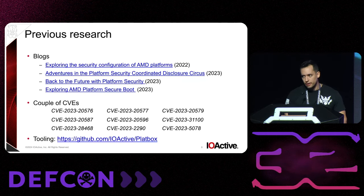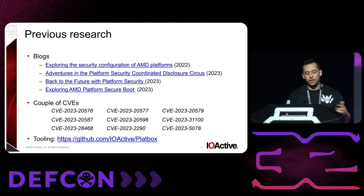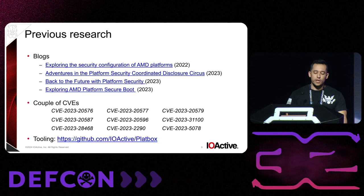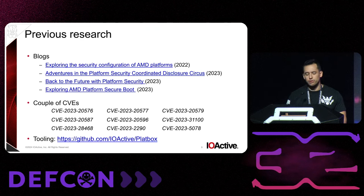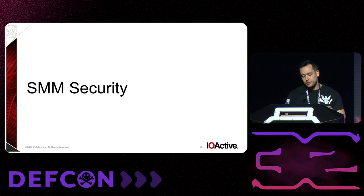We've been working on this area for a bit. We published some blogs, done some presentations before at Hexacon, we have a couple of CVEs in 2023, and we released some tools for checking for misconfigurations and known issues. All of these things we've done before are mostly related to either misconfigurations from vendors or software vulnerabilities in components. What we're going to present today is an architectural flaw in the AMD processor itself — so that's very different — and for that, we're going to see again what makes the security of SMM.